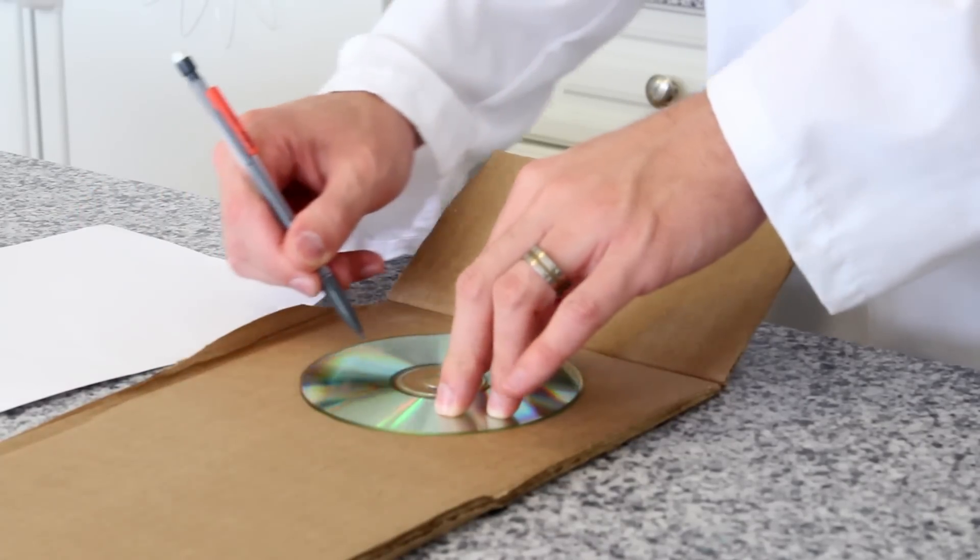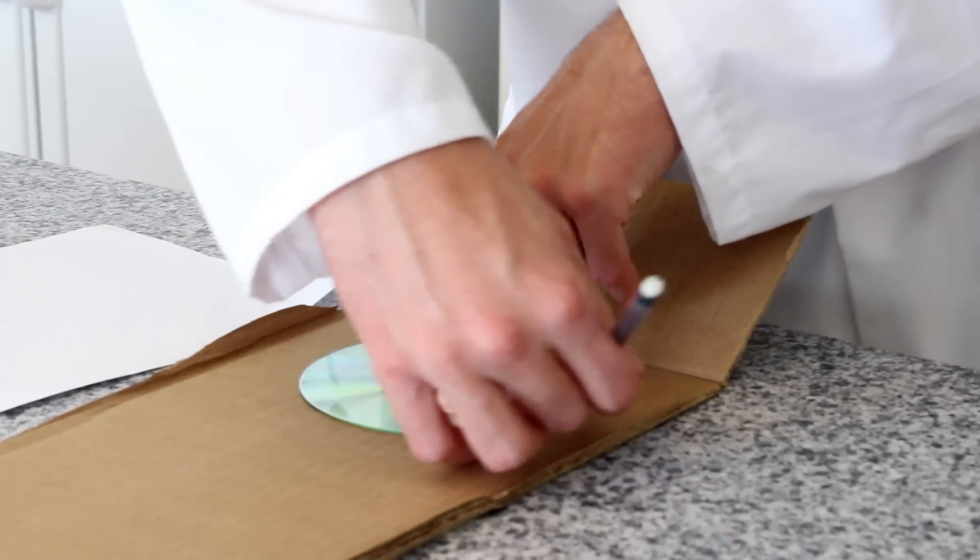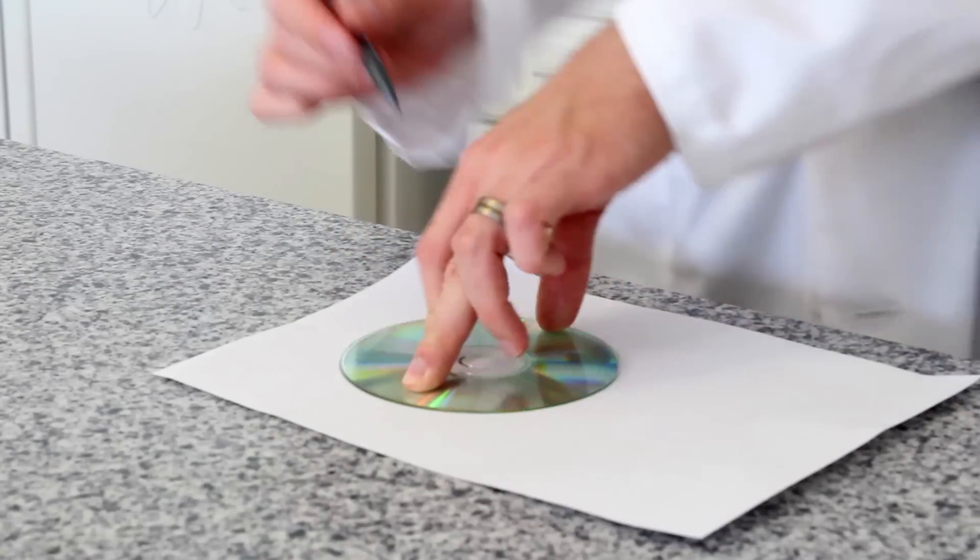The first step in our experiment is to use your disc to trace out the shape of a circle on your cardboard and on your piece of paper.